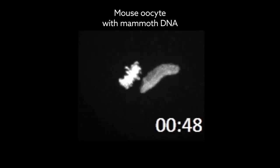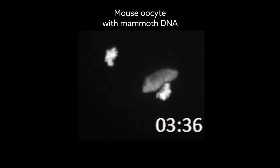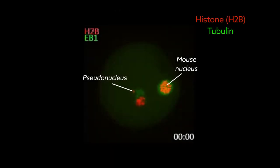That structure drove the formation of the characteristic spindles that pulled genetic material apart during cell division. In the end, the pseudonucleus was absorbed by the nucleus of the mouse-egg cell.